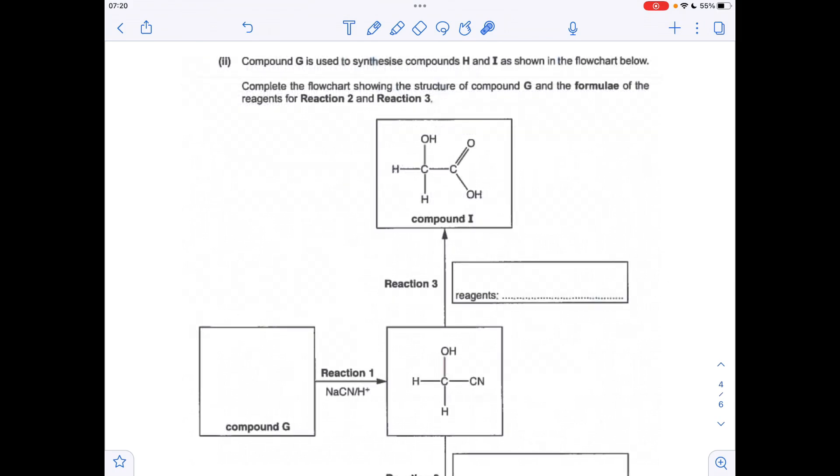So moving on to the flow chart now. So the compound in the middle box here, this is a hydroxynitrile. Well, we've just seen a reaction where the CN group substitutes for Cl. So that means compound G could be this one here. So we've just swapped the CN for a Cl. That can be any halogen, by the way. So a Br, an F, or an I. You can also make hydroxynitriles from carbonyl compounds. So methanal was also a possible answer for compound G.